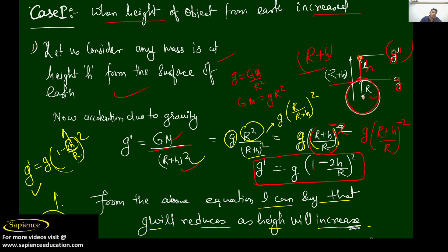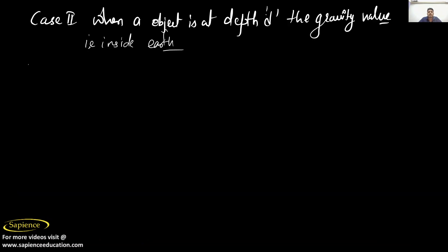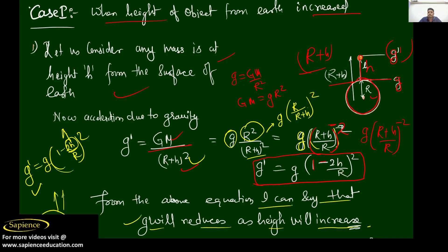From the above equation, we can see that as height h increases, the term (1 minus 2h/r) decreases, so g-dash decreases. Therefore, g will reduce as height increases. As much as you go above the earth's surface, the acceleration due to gravity will decrease.